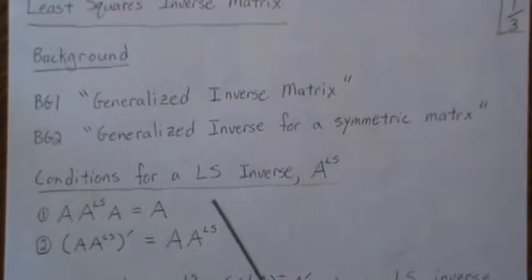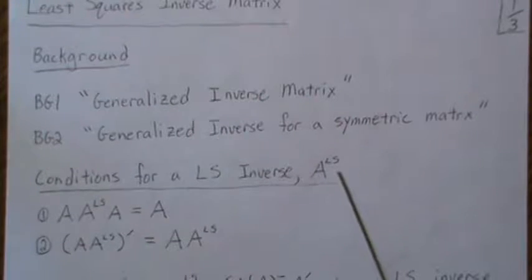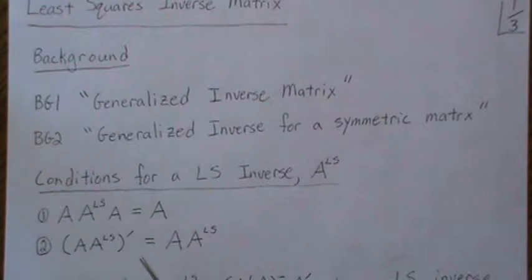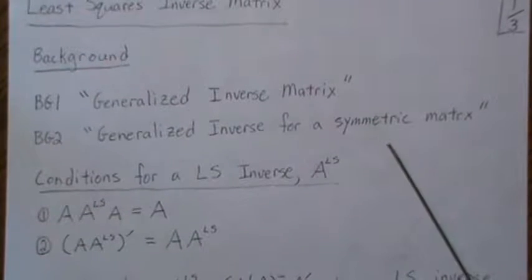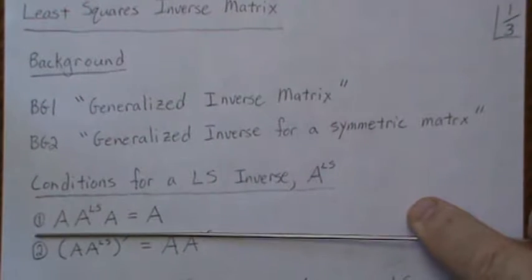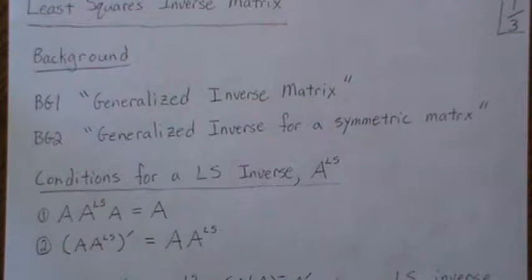The conditions for a least squares inverse — we're going to call it A_LS — and the property for a generalized inverse was that A_LS · A · A_LS equals A_LS. So a least squares inverse is a generalized inverse, but now we're going to add a condition that this matrix product is symmetric. In developing the generalized inverse for a symmetric matrix, we showed it also has a reflexive property.